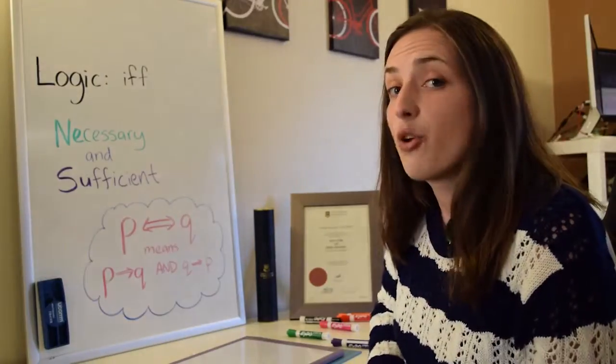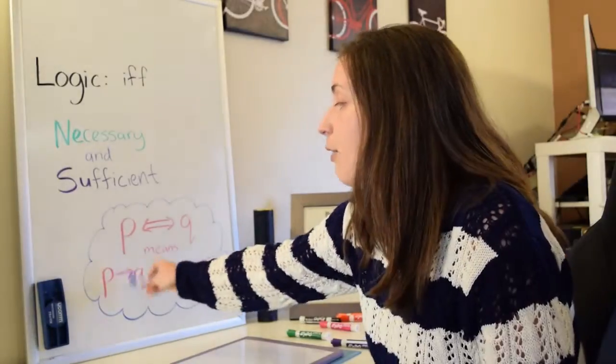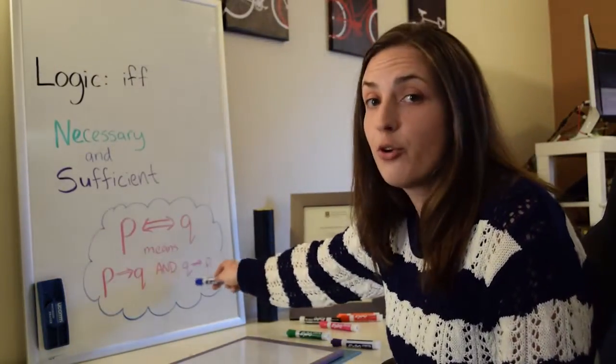Now, if you think about if and only if, what it means is you have the forward direction, which is if P, then Q, and you have the converse, if Q, then P.